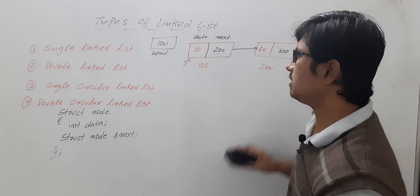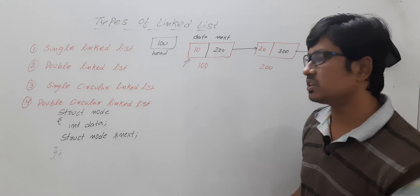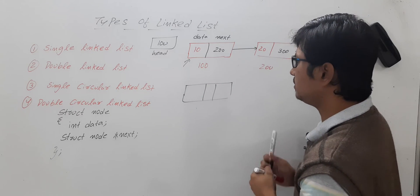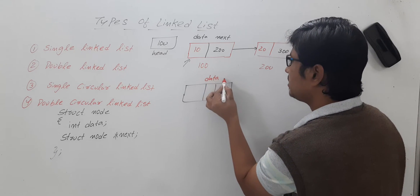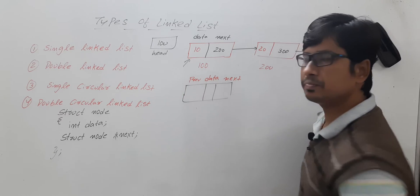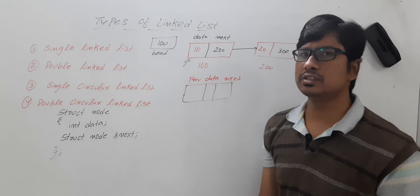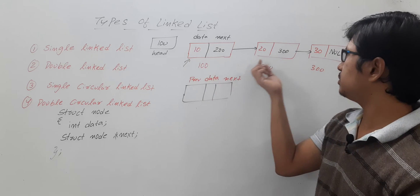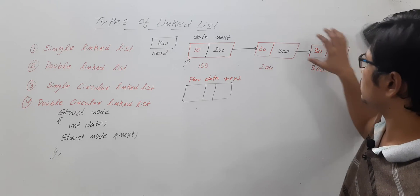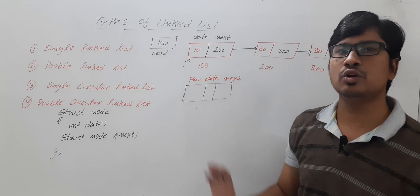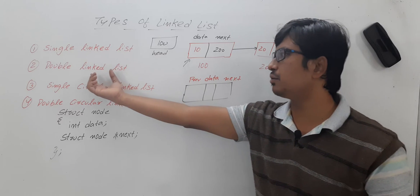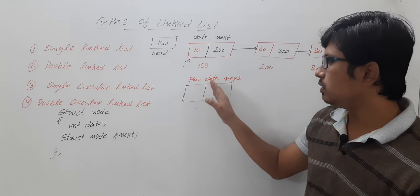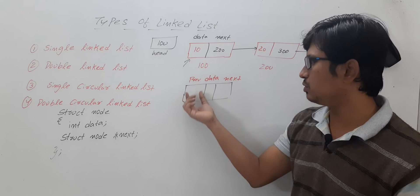Now, coming to the double linked list. In a double linked list, each node consists of three things: data, the address of the next node, and the address of the previous node. The limitation of the single linked list is that you can only traverse in one direction — forward. Backward movement is not possible. To overcome this, the double linked list was designed, allowing traversal using both a next pointer and a previous pointer.